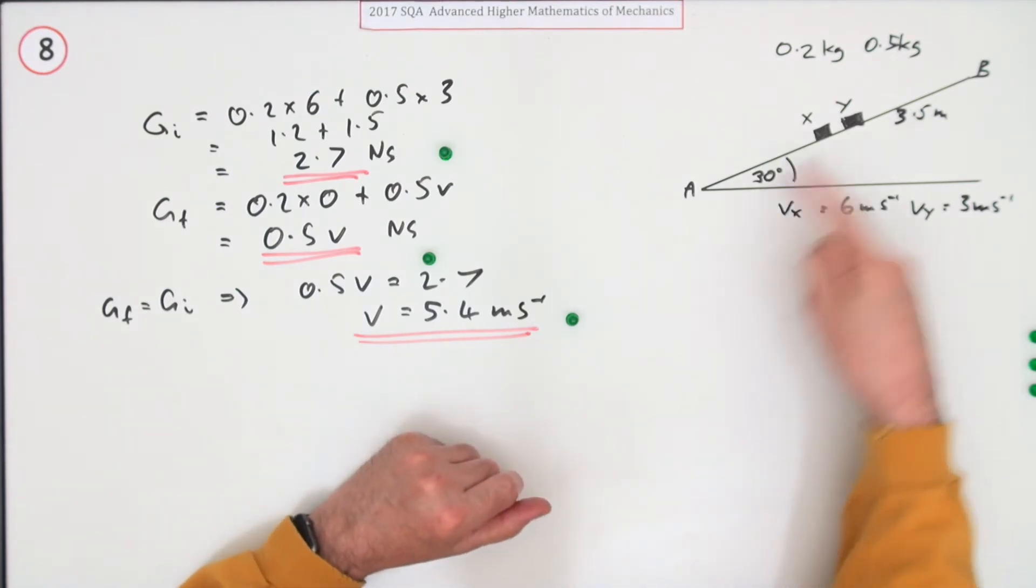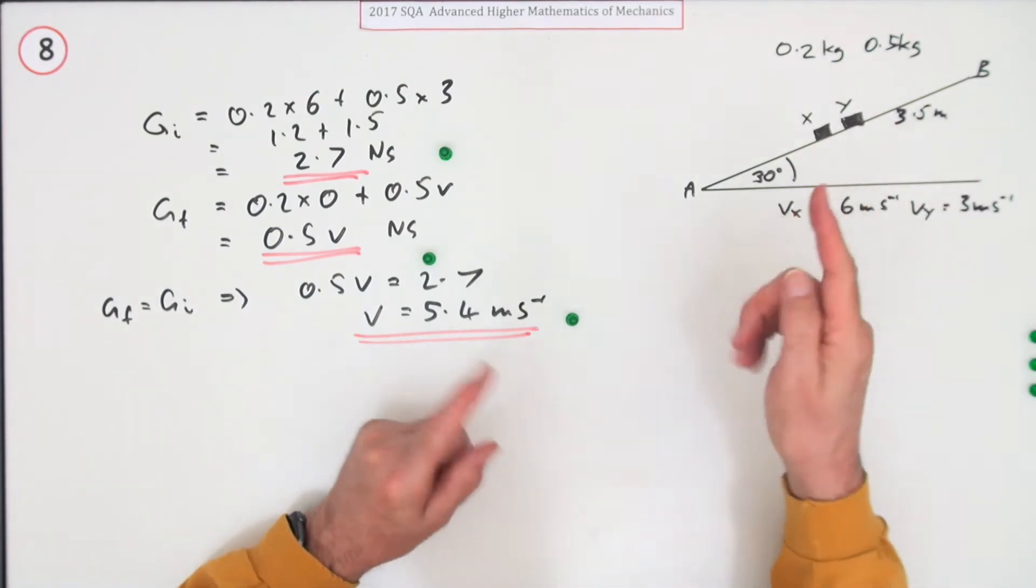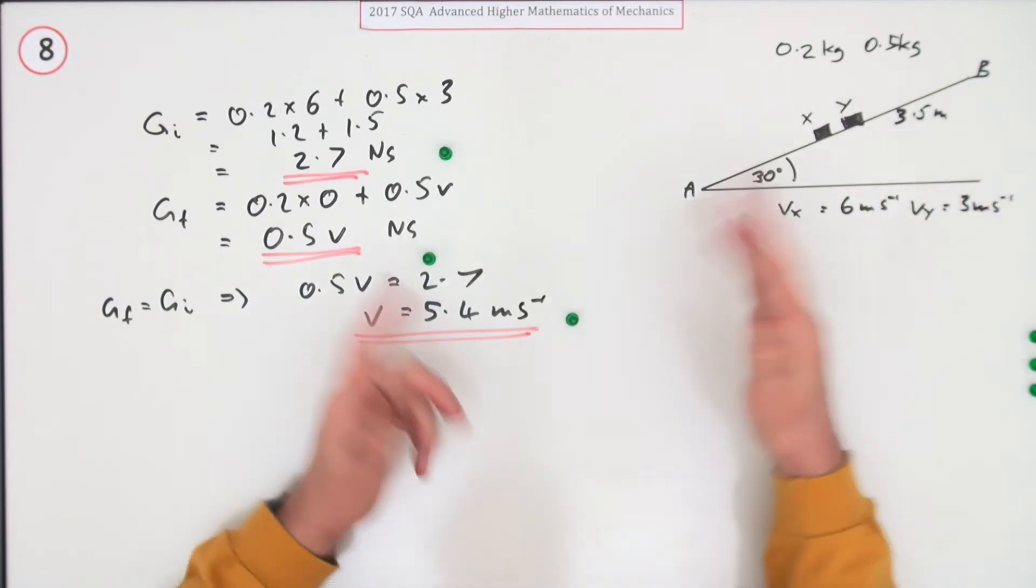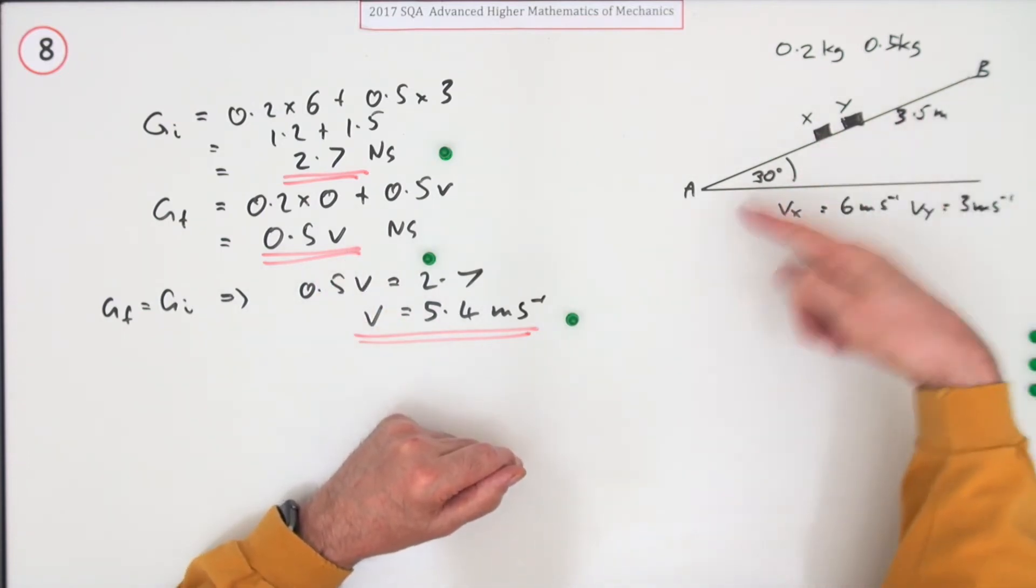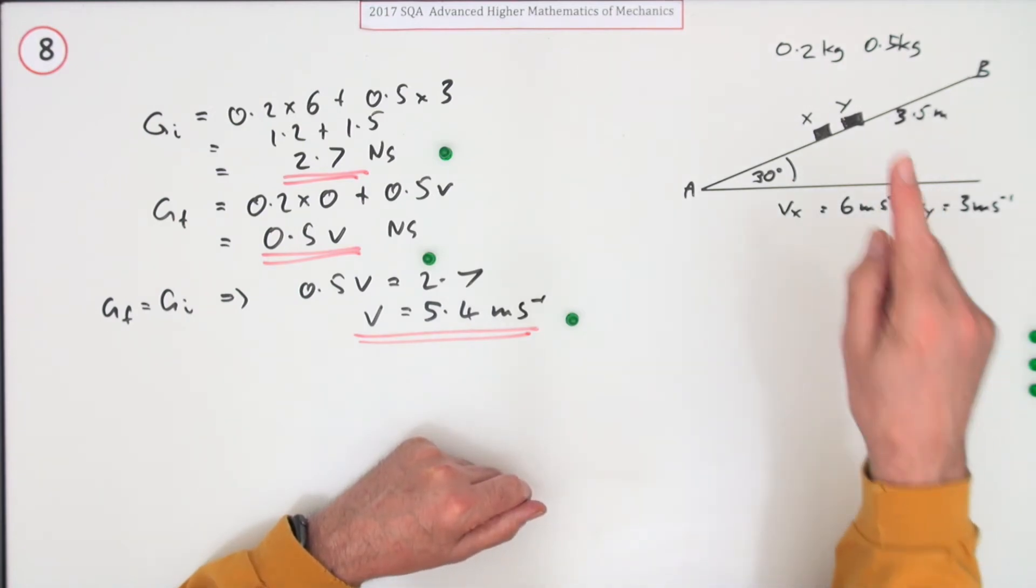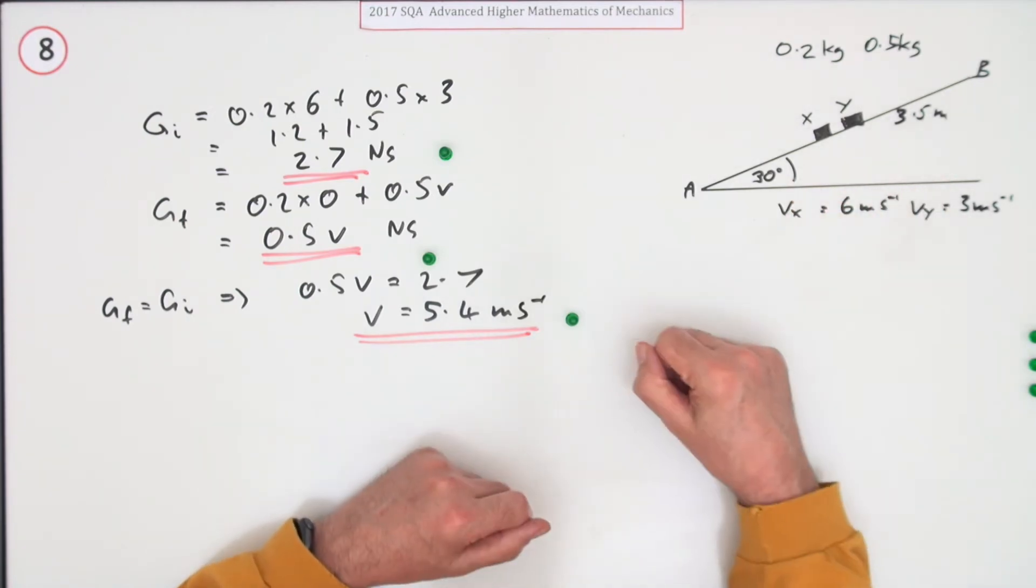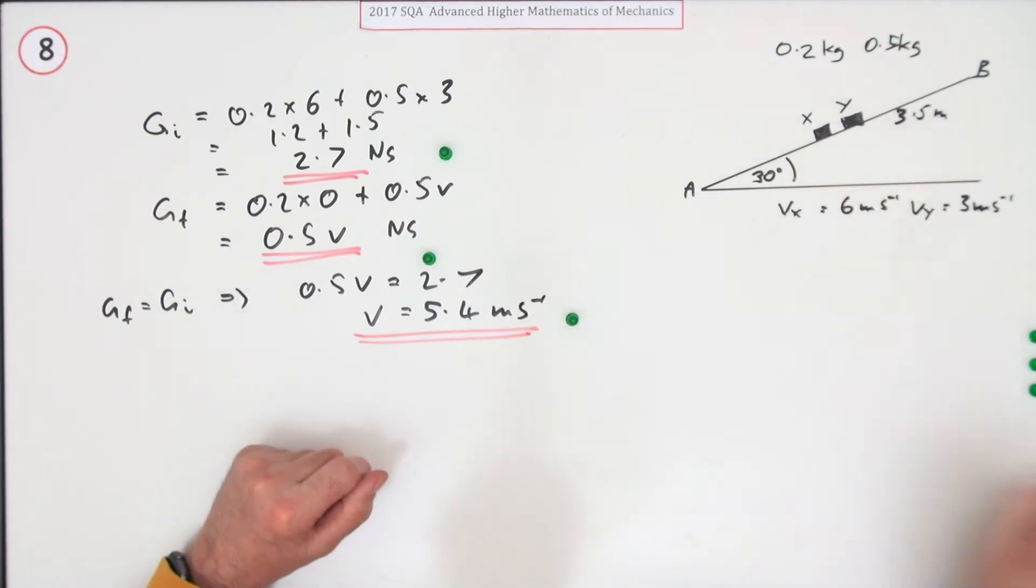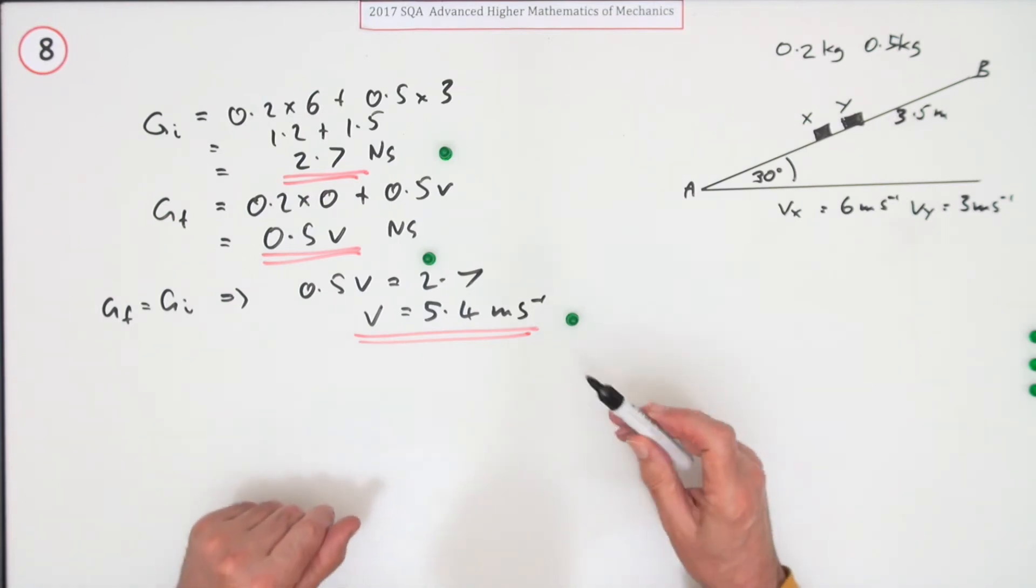But now you've got two ways of working out how far it goes. You can use the equations of motion or you can use work energy, or it's just conservation energy here because there'll be no work done against friction. The advantage of the energy method is you don't have to work out forces and acceleration in this case. Equations of motion I'll have to work out the forces because I'll need to know the acceleration. So if I do it that way first.